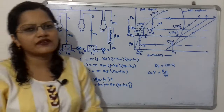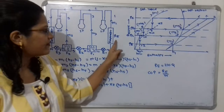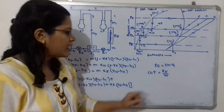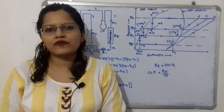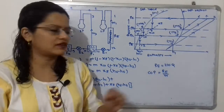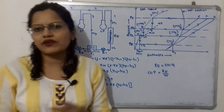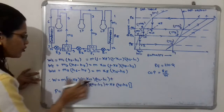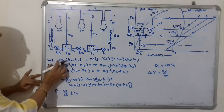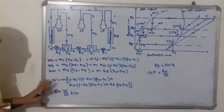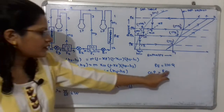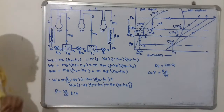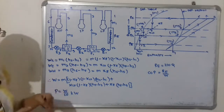The refrigeration effect RE = 210Q if the evaporator load Q is given. The coefficient of performance COP = RE / W. For work done, we can use formulas in terms of M or in terms of individual masses M1, M3, and M5. If power P is given, then W = P × 60.